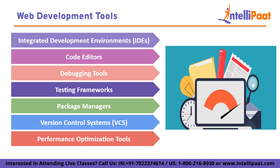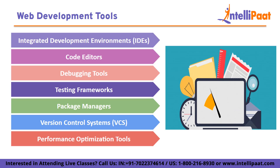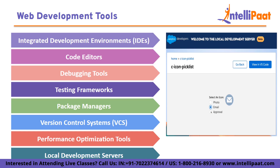Performance optimization tools like XHProf and Blackfire help PHP developers analyze and optimize the performance of web applications. These tools profile code execution, identify performance bottlenecks, and suggest improvements to enhance application speed and efficiency. Local development servers like XAMPP, WAMP Server, and MAMP provide a local environment for PHP development. They bundle Apache, MySQL, and PHP, allowing developers to test and debug their applications locally before deploying them to production servers.